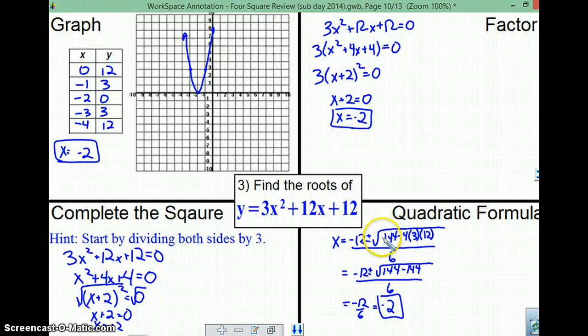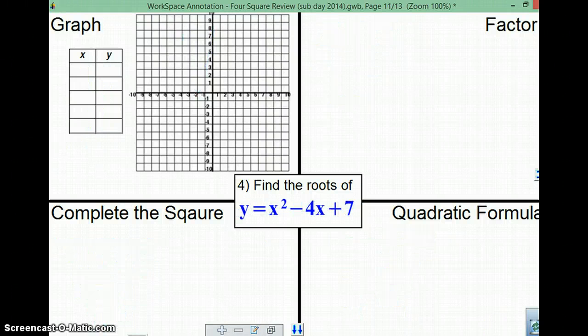All right, here, notice that our discriminant turned out to be 0, which is why we ended up with just one root. All right, last one. Go ahead and pause the video right here. I'll put my work up, and then you can compare answers.